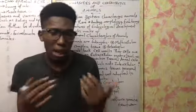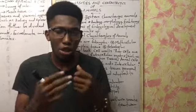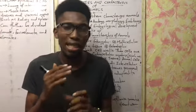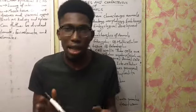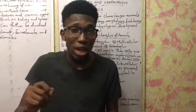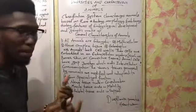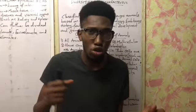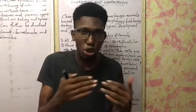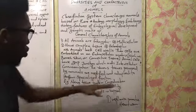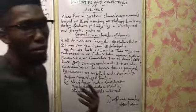Animal cells have gap junctions. Between cells of an animal, you have spaces that are connected together and bridged, which we call gap junctions. These are necessary for intercellular communication — the transport of information or materials from one cell to another. So animals have gap junctions that are responsible for intercellular communication.